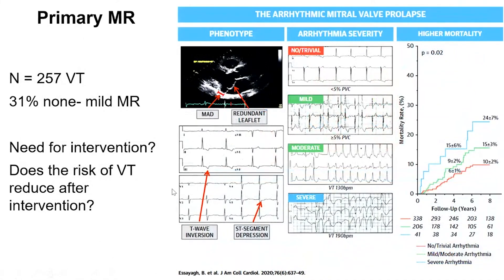This has been shown in multi-center registries, including one of the largest from the Mayo Clinic, including 257 patients with ventricular tachycardia. Only 70 percent of them had moderate or severe mitral regurgitation, meaning 30 percent did not have mitral regurgitation even though they had the morphological phenotype of Barlow disease.